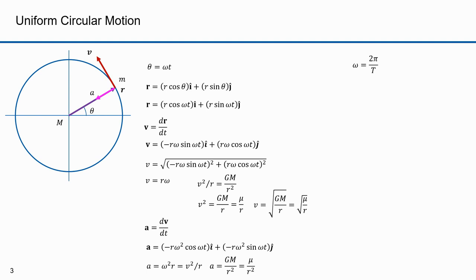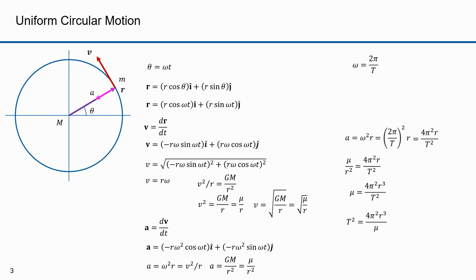For uniform circular motion, omega — the angular speed — equals one full 2π radian rotation over the period of the orbit, capital T. In the equation a equals omega squared r, substituting 2π over T for omega gives 4π squared r over T squared. Hence, mu over r squared equals 4π squared r over T squared, which means mu equals 4π squared r cubed over T squared. Therefore, T squared equals 4π squared r cubed over mu, which implies T squared is proportional to r cubed — that is Kepler's third law.